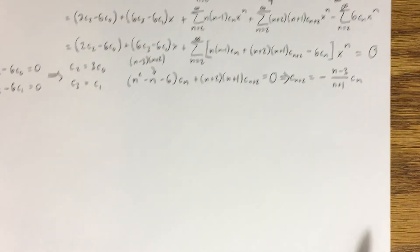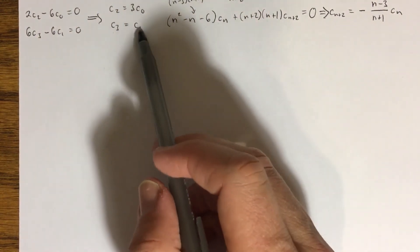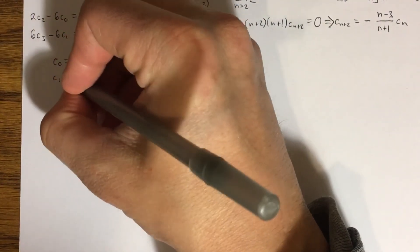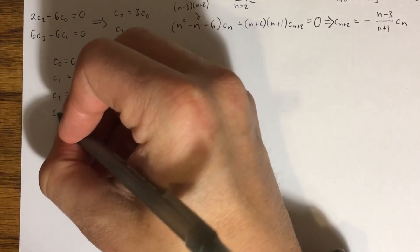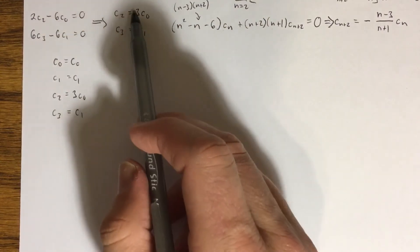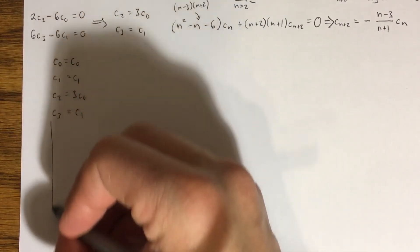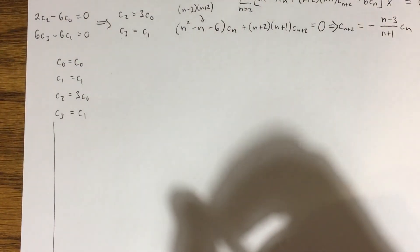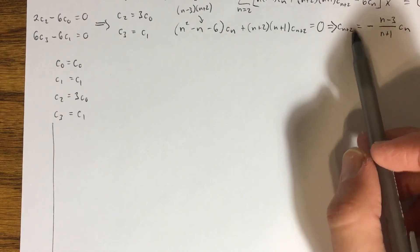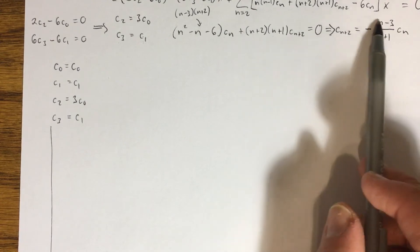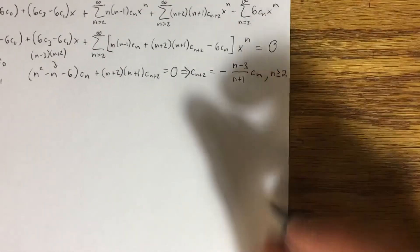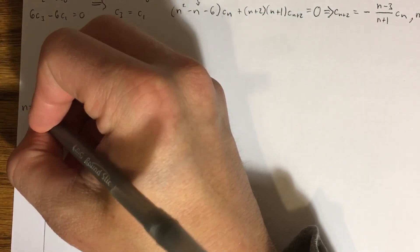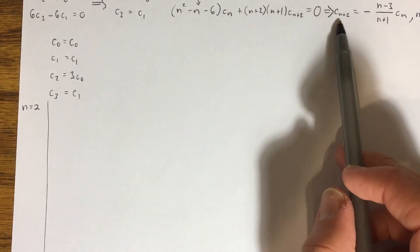Now we can start finding coefficients. c₀ and c₁ drop out of the recurrence relation, so they become parameters: c₀ = c₀, c₁ = c₁. From earlier: c₂ = 3c₀ and c₃ = c₁. An important note: looking back at where the series started, the recurrence relation applies starting at n equals 2. So we begin using it at n ≥ 2. Plugging n=2 gives c₄.